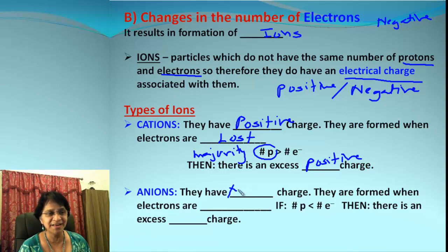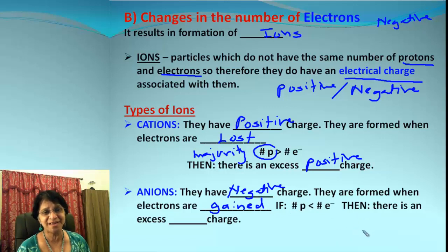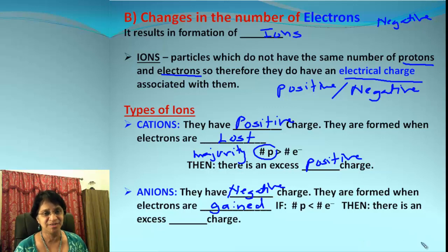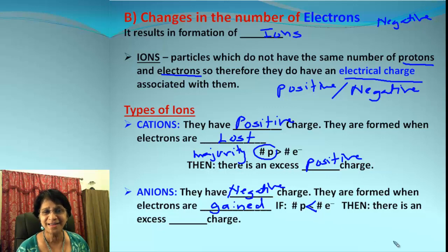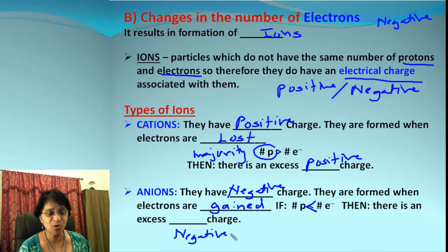Anions have a negative charge, and they are formed when electrons are gained. In an atom, the number of protons and electrons is equal. But for an anion, we are going to have more electrons — in other words, protons will be in the minority. With fewer protons and more electrons, it ends up having a total net negative charge. So now you know what happens when we change the number of electrons.